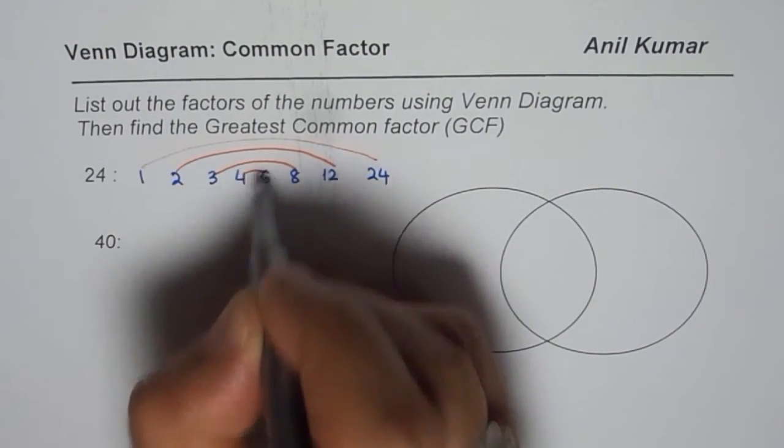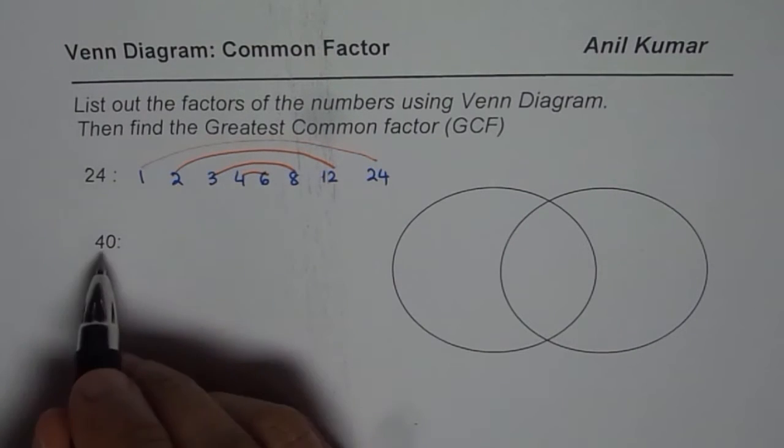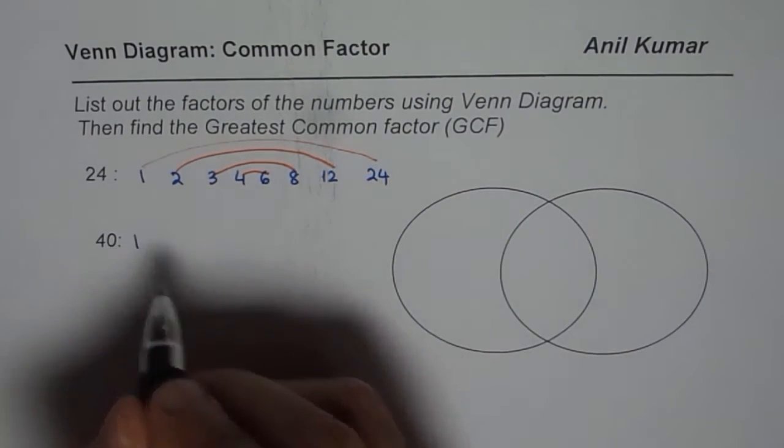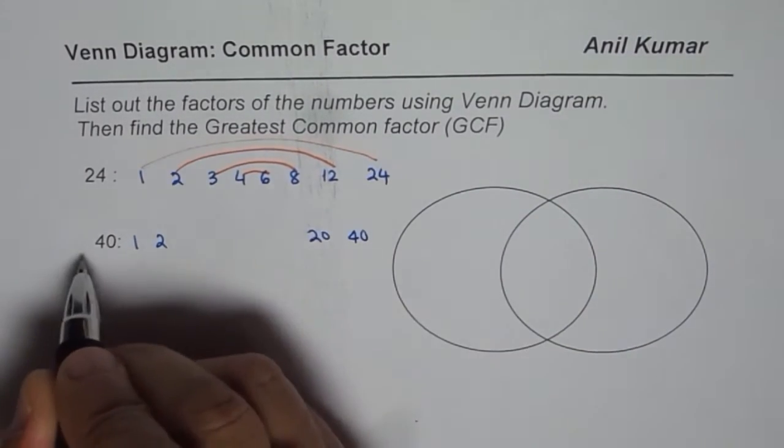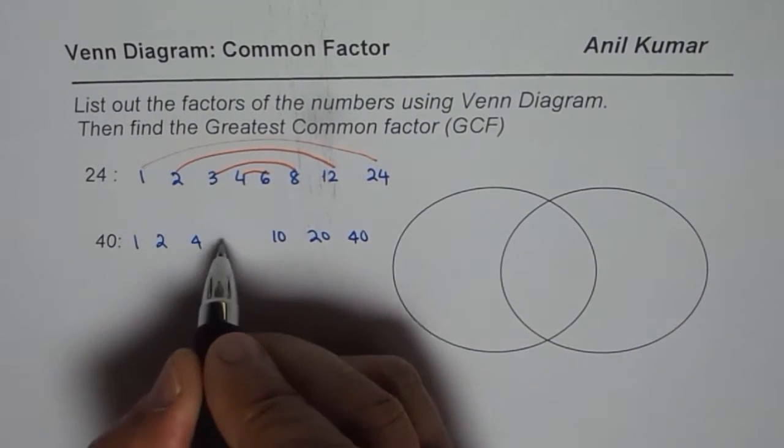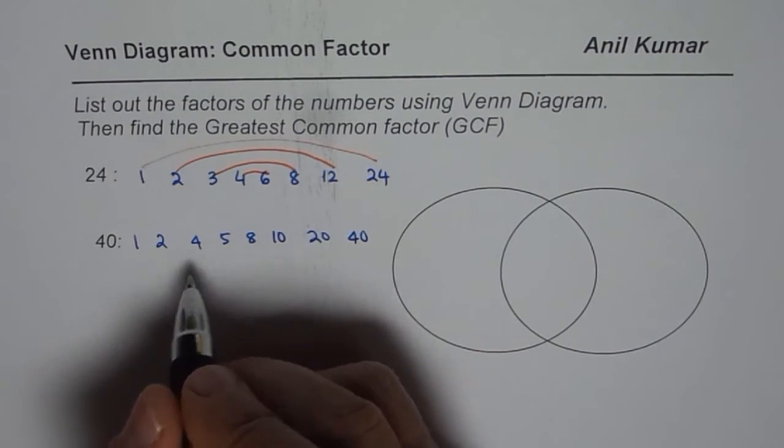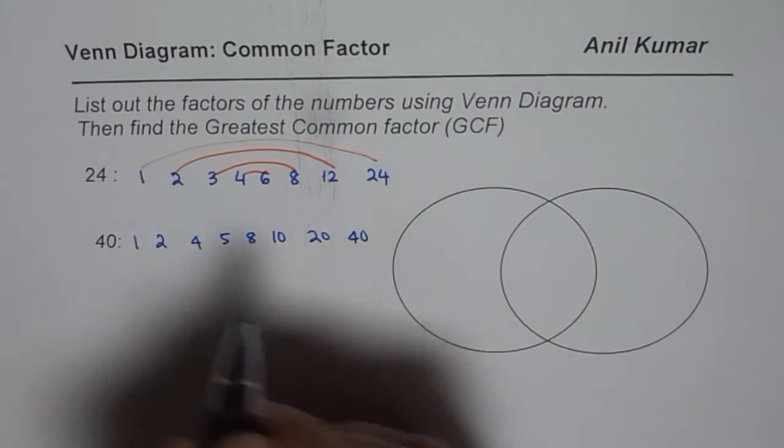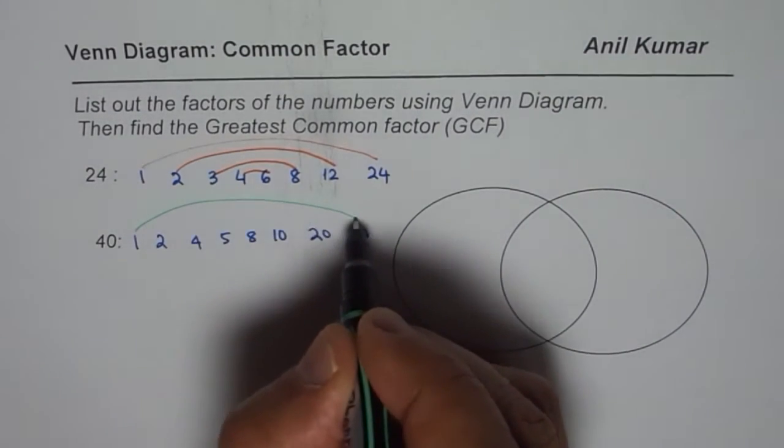How about 40? 1 times 40, correct. 2 times 20, right. 3 doesn't go. 4 times 10, 5 times 8, right. 6 times, 7 times, 8 times 5. So that is all. So we have factors of 40 also. These are the factors.